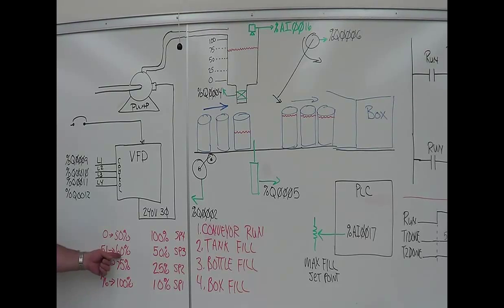The tank is 51 to 60% full, we're running the pump at 50% speed. If the tank is 61 to 75% full, we slow it down to 25% speed 2.